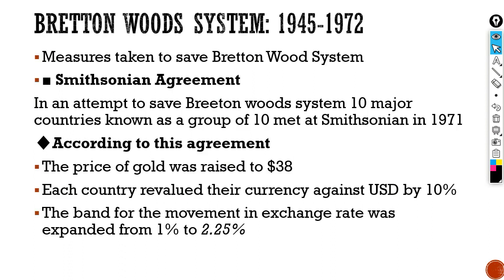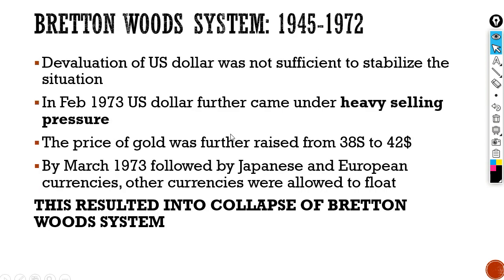There were a few measures taken to save the Bretton Woods System. One of them was the Smithsonian Agreement — an attempt to save the system where 10 major countries, known as the Group of Ten, met at the Smithsonian in 1971. According to this agreement, the price of gold was raised to 38 dollars, each country revalued their currency against the USD by 10%, and the band for movement in exchange rates was expanded from 1% to 2.25%. However, the devaluation of the US dollar was not sufficient to stabilize the situation.